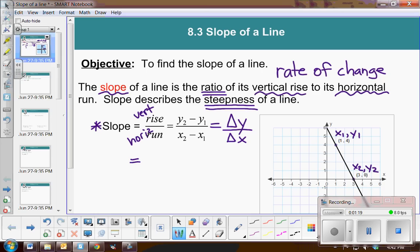So according to my formula for slope, I'm going to subtract the y values, so 0 minus 4, and compare that to the difference of the x values, 3 minus 1. So I end up with negative 4 over 2.